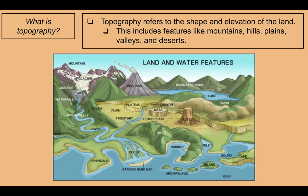What is topography? Topography refers to the shape and elevation of the land. This includes features like mountains, hills, plains, valleys, and deserts. Mountains are higher up. Hills are a milder sort of mountain. Plains is flat land — good for farming. Valleys is flat land in between mountains. And we know what deserts are.